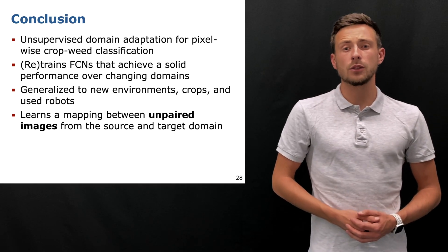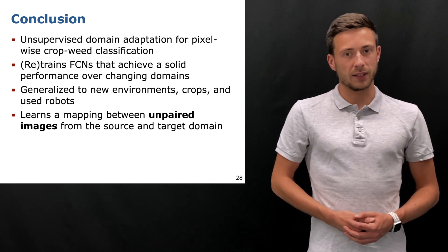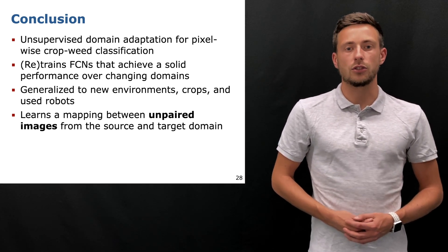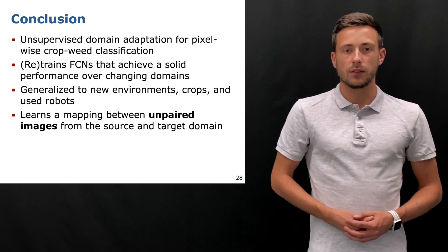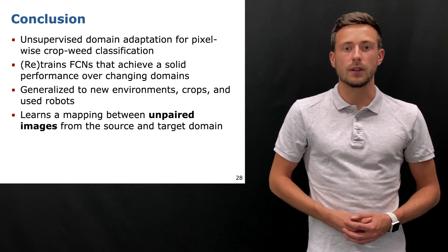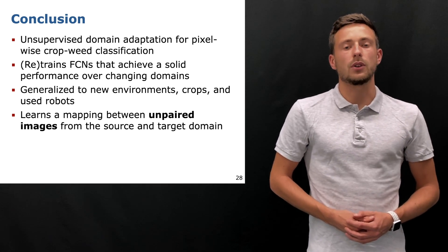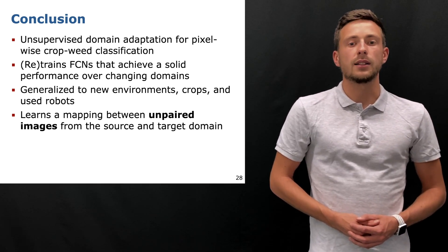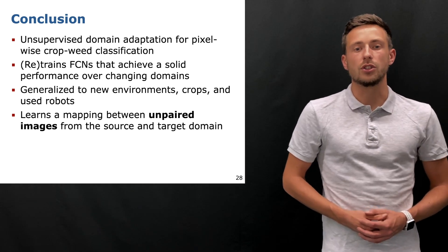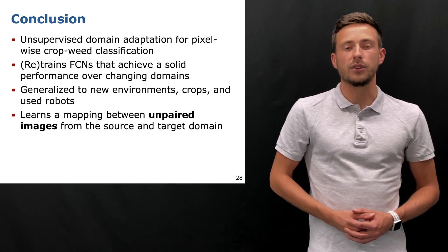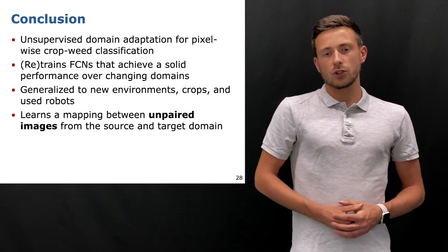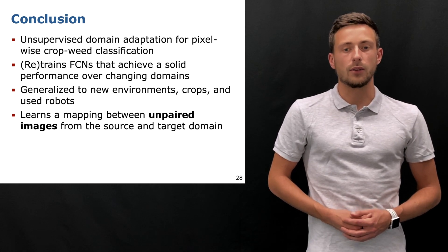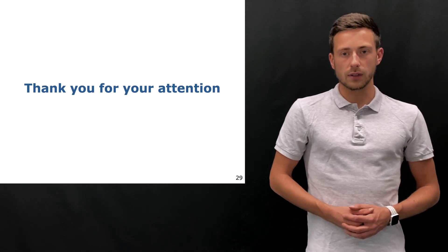In this talk, I presented an unsupervised domain adaptation approach to the problem of pixel-wise crop weed classification. Our approach enables retraining an FCN that achieves solid performance in changing domains, such as new field environments, different crops and different sensors, while exploiting labeled data only from a source domain. Our extensive evaluation demonstrates that we outperform CycleGANs in changing domains and substantially improve the generalization capabilities of crop weed classification systems. Our approach learns a mapping between unpaired images from the source and target domain by exploiting cycle as well as semantic consistency constraints. Thank you for your attention.